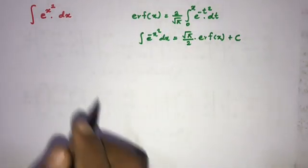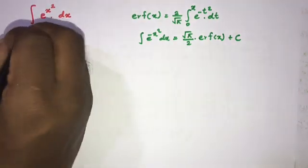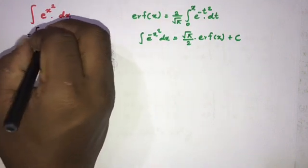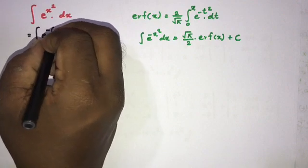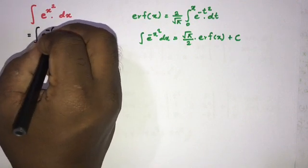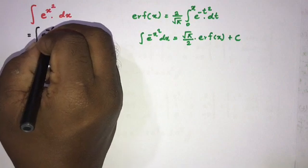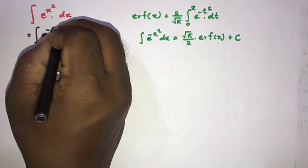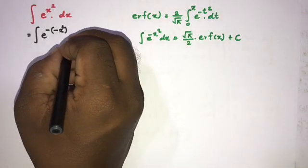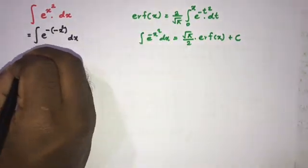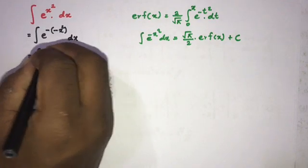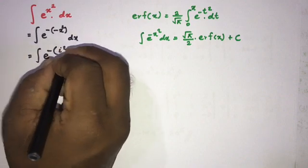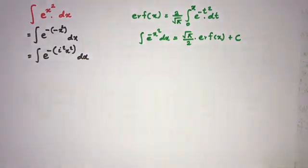Now in our question we have e to the x squared, not e to the minus x squared. So we write e to the x squared as e to the minus of minus x squared. Since minus times minus equals plus, this is valid. So we have the integral of e to the minus x squared dx.